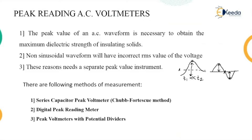This peak value of AC waveform is necessary whenever there is need to obtain the maximum dielectric strength of the material. Dielectric means the insulating strength of the material. The maximum insulating strength of the material can be found out by applying the peak value of the voltage, and how much voltage is applied for the testing purpose should be measured. Therefore, we have this particular method to understand.